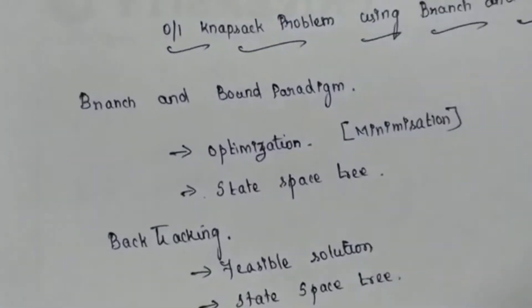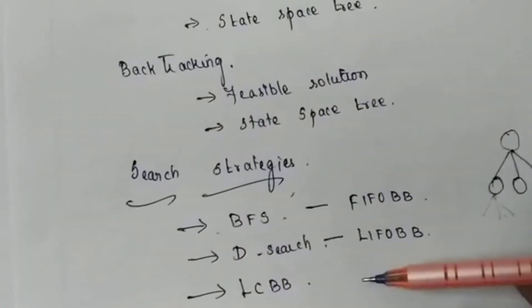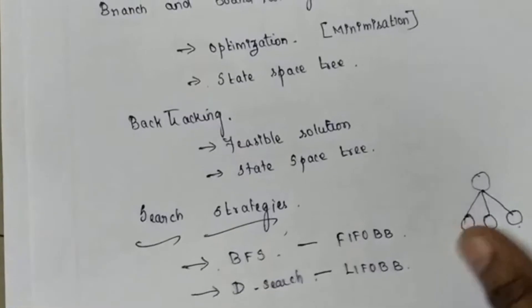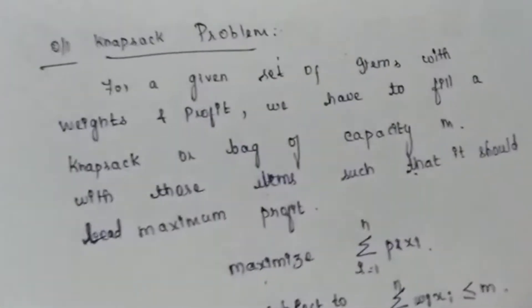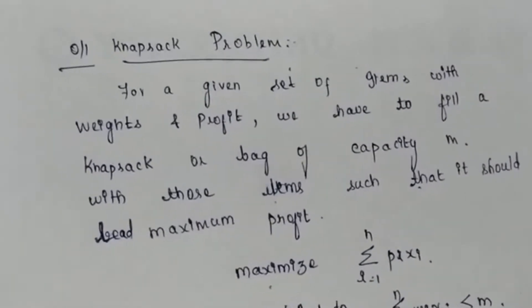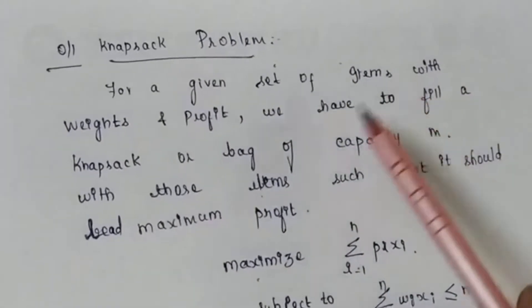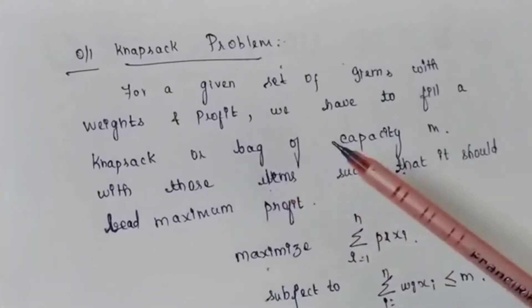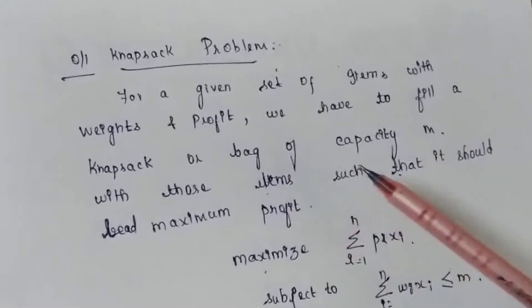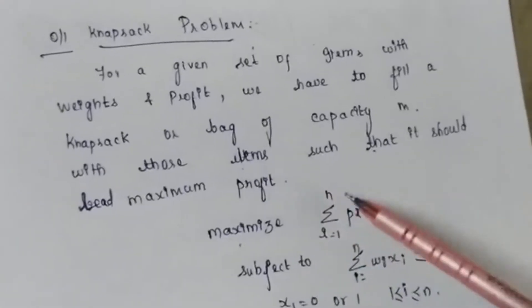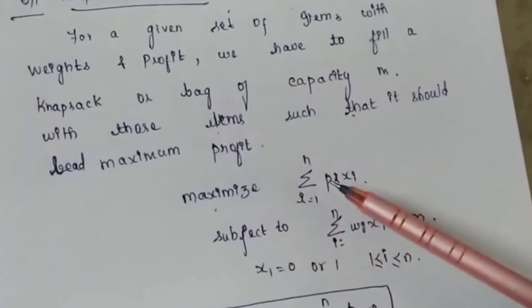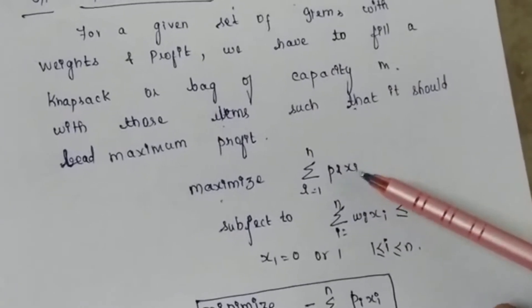Let's move directly to the knapsack problem. For details on the differences between the three strategies, see the introduction to branch and bound video. For the 0/1 knapsack problem, we are given a set of items each with a weight and profit, and we have to fill a knapsack of capacity m to produce maximum profit — maximizing the sum of pi * xi.